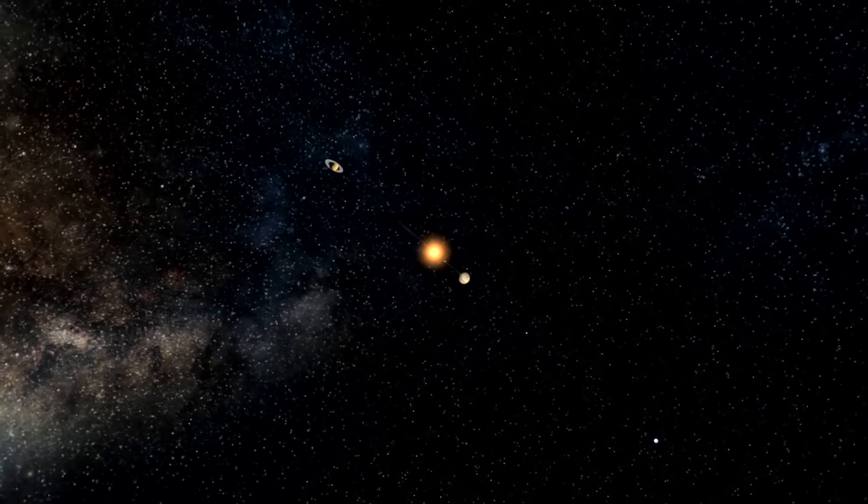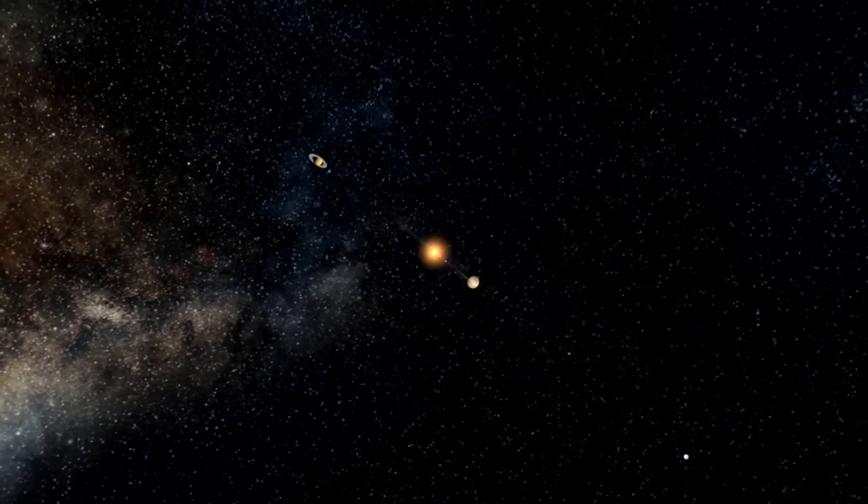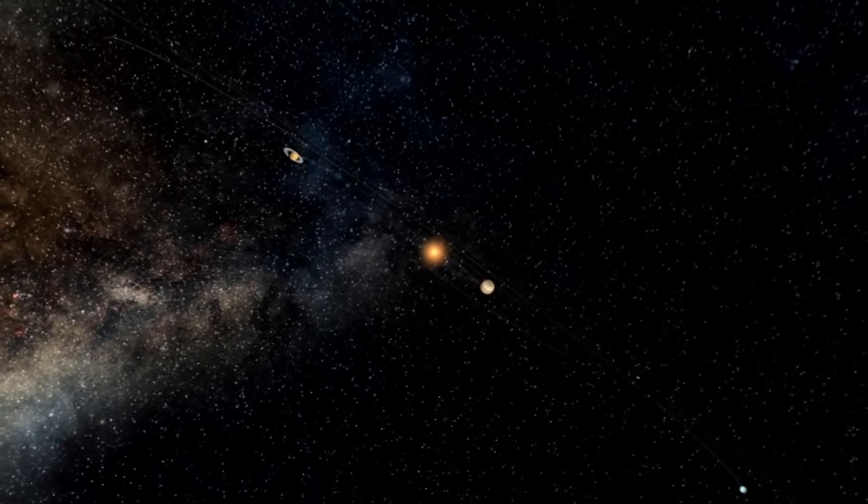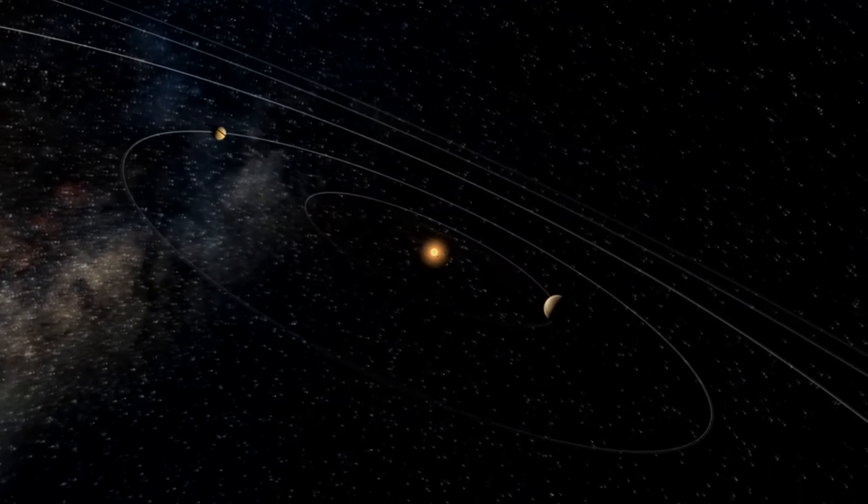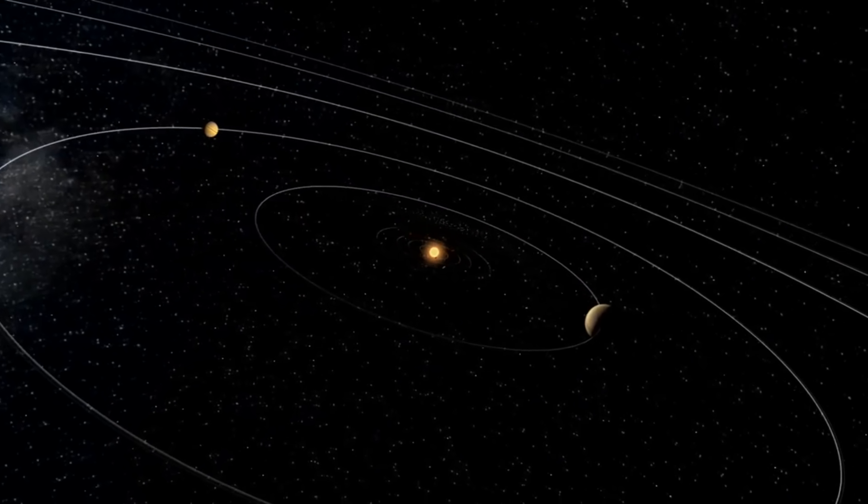Most of us know the solar system as the simple 8 planet model of Mercury, Venus, Earth, Mars, Jupiter, Saturn, Uranus and Neptune. But that's not how it has always been.